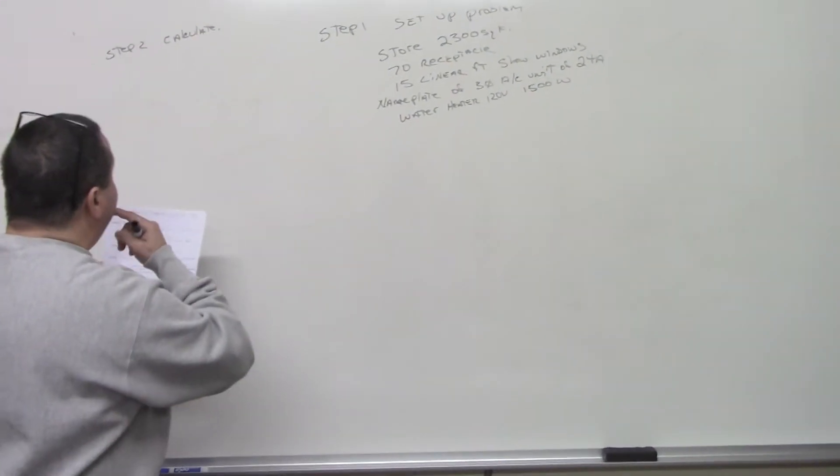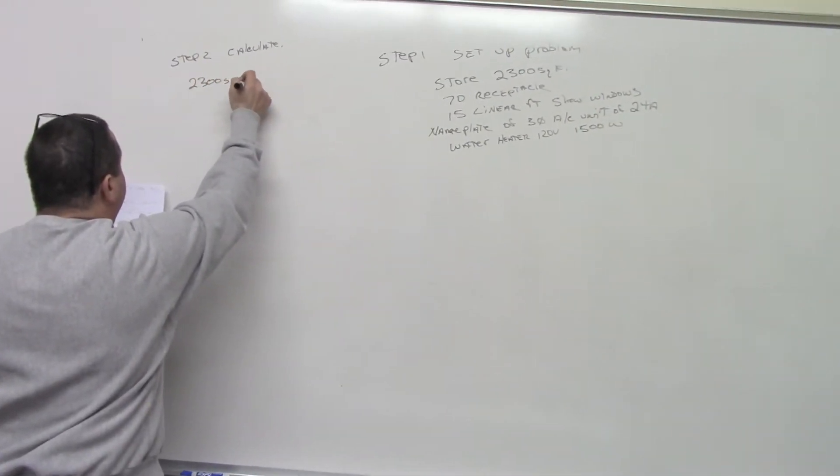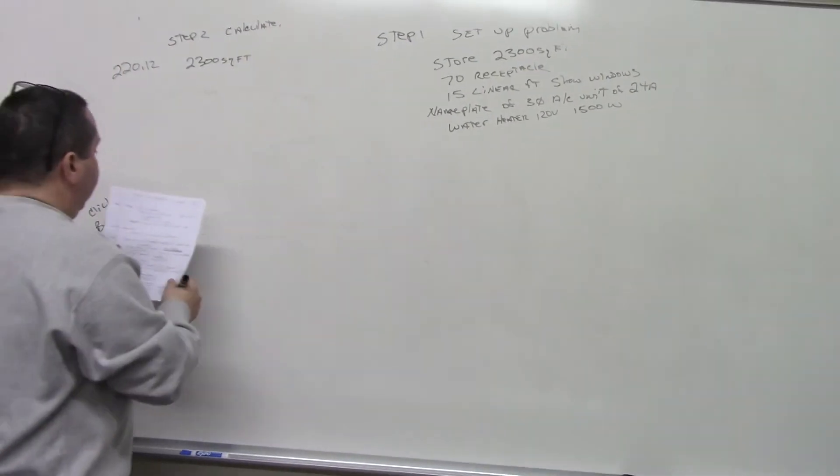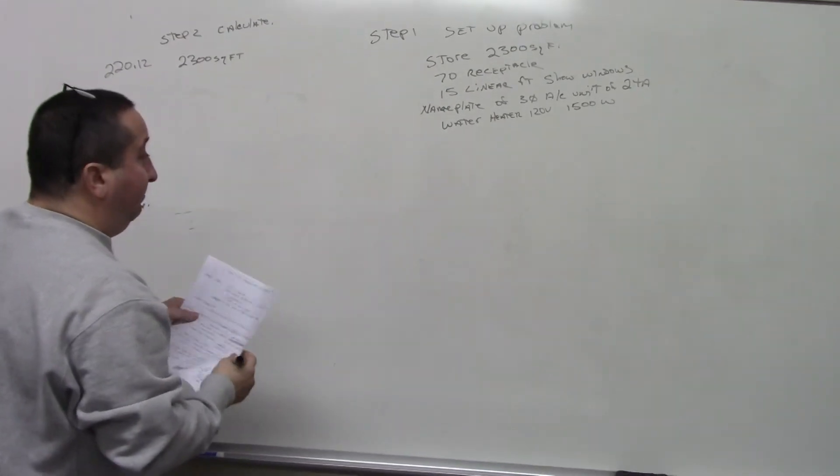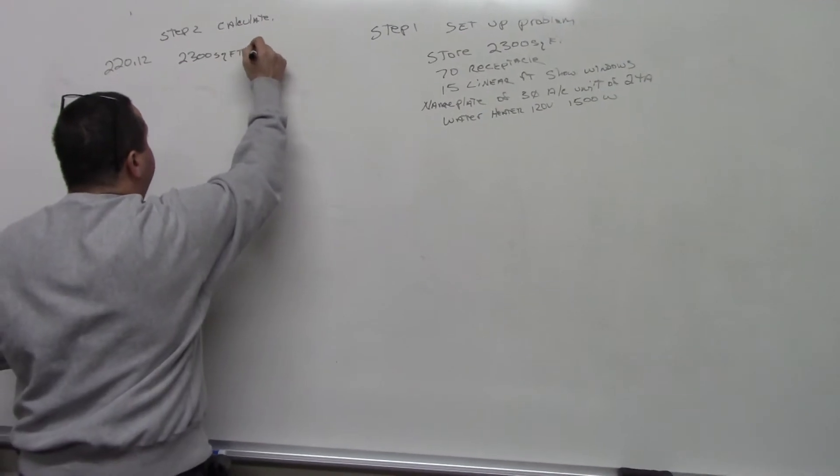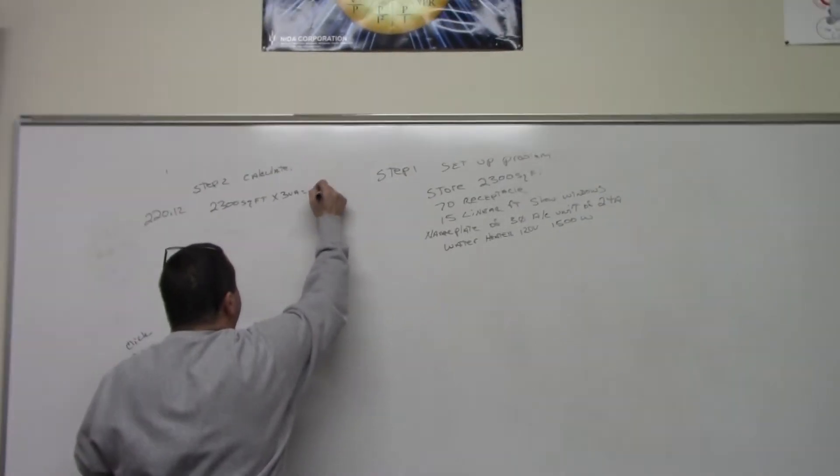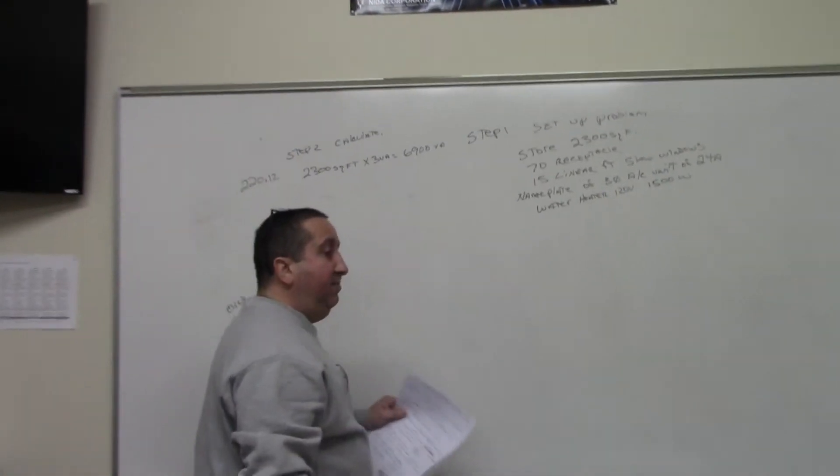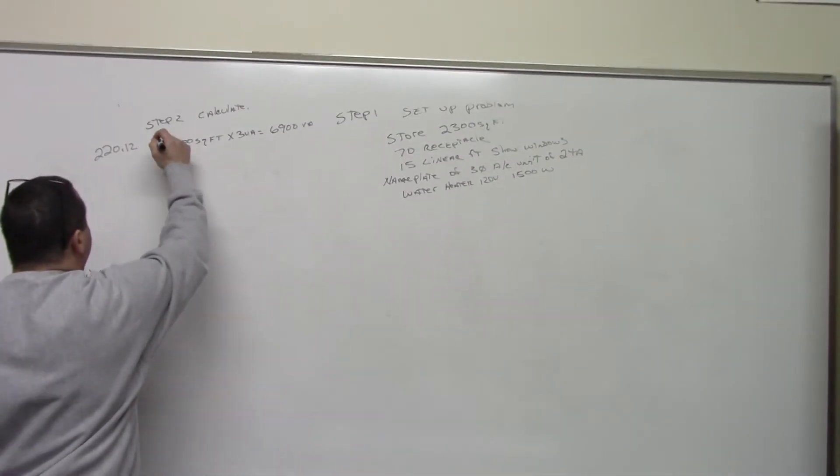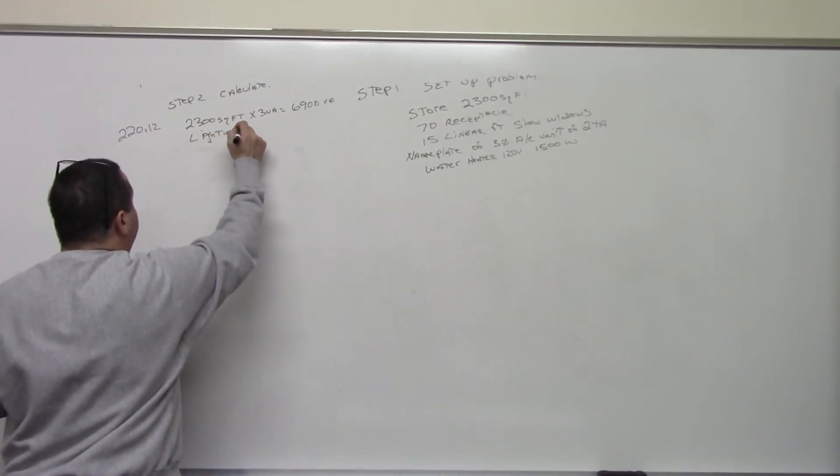So here we have, we're going to calculate, we have 2300 square feet. And we go to 220.12. And what this talks about is your square footage and how many volt amps you're allowed. And this one, it's three volt amps, which is going to equal 6900 volt amps. But the problem is, that's for the lighting. This is for lighting load.